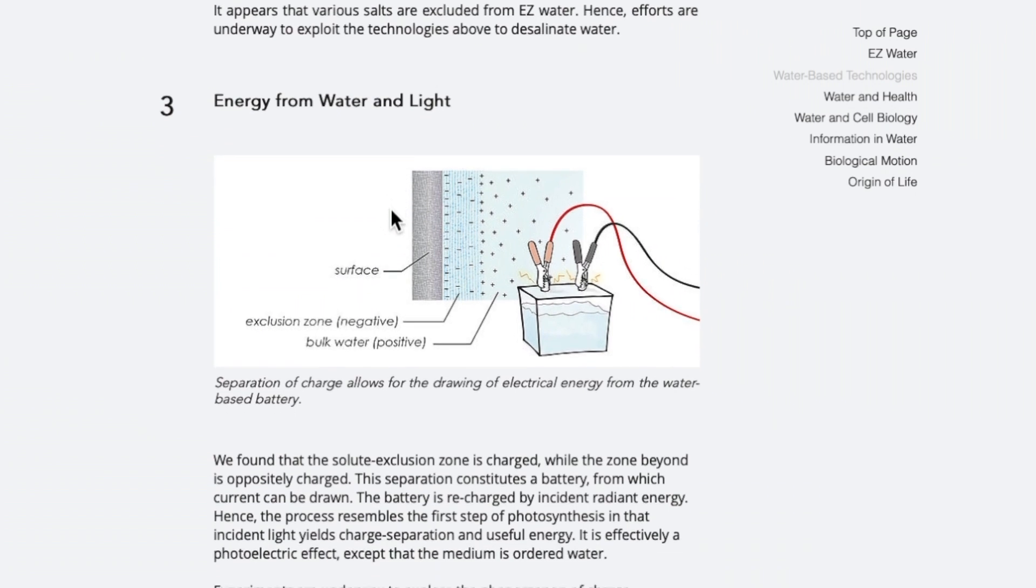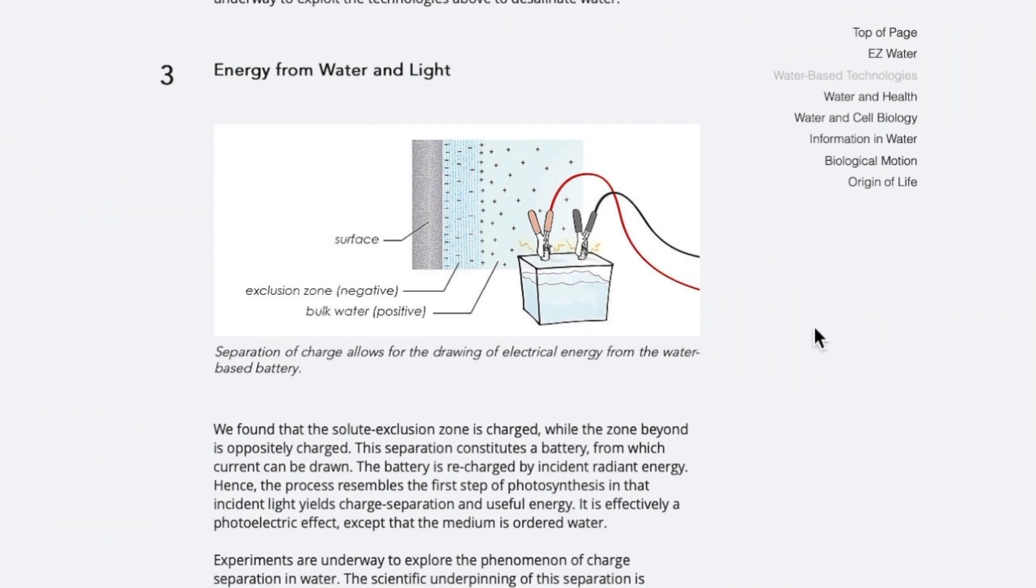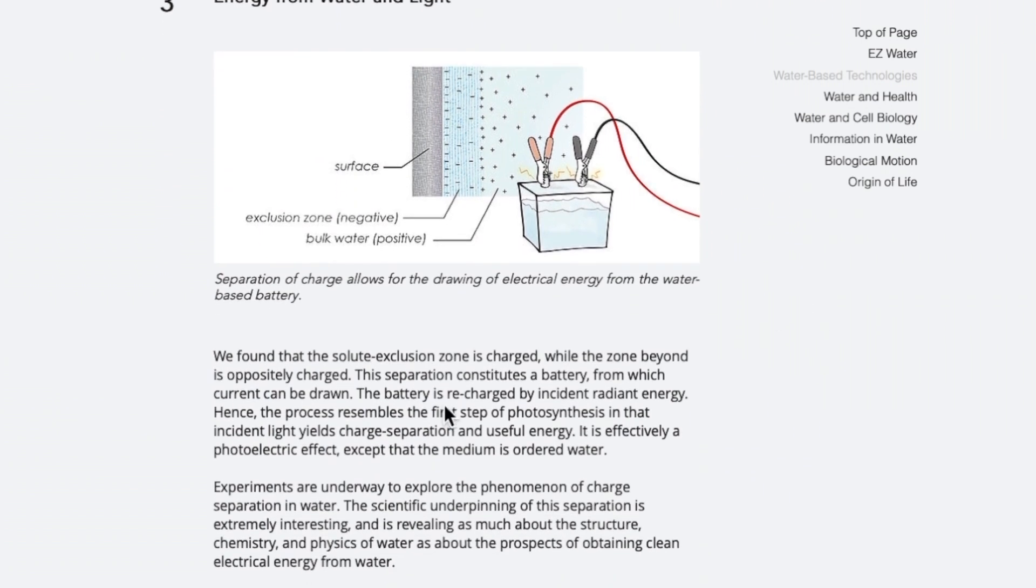And then we have here as part of the article on energy from water and light. So he says we found that the solute exclusion zone here is charged, while the zone beyond here is oppositely charged. This separation constitutes a battery from which current can be drawn.